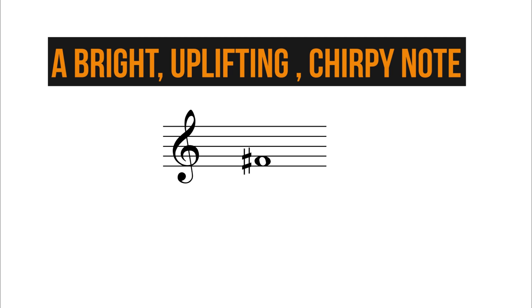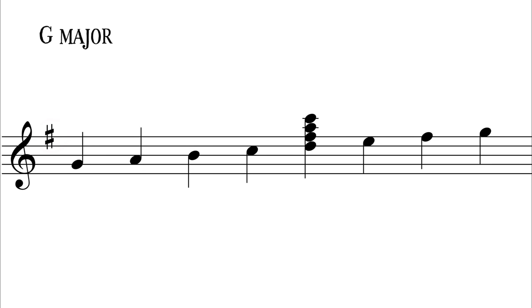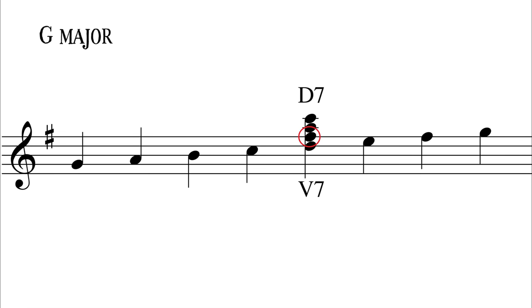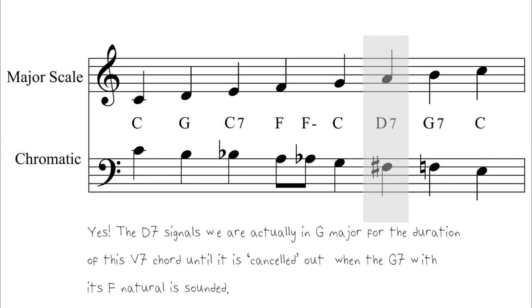The last non-diatonic note to look at in detail is the F sharp. The key of G major contains this note. This is the major third of the V7 chord in G major, D7. This, again, can be thought of as a micromodulation to G, as the duration of this G tonality is so short before it resolves back to G7 and then C.